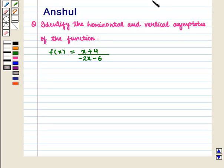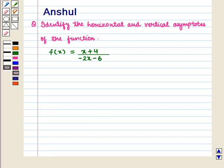Hello and welcome to the session. In this session we are going to discuss the following question: identify the horizontal and vertical asymptotes of the function f of x is equal to x plus 4, whole upon minus of 2x minus 6. Now let us start with the solution of the given question.